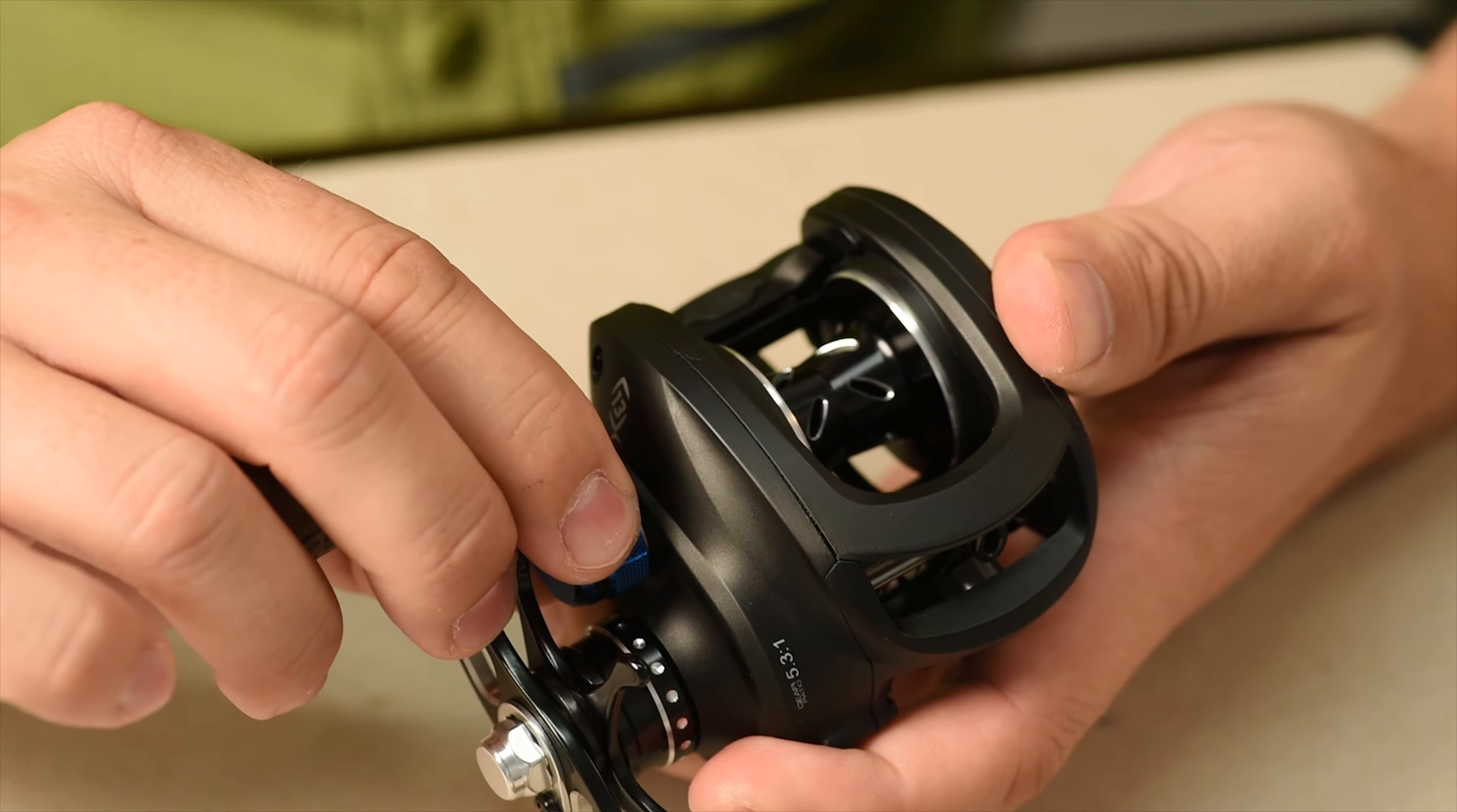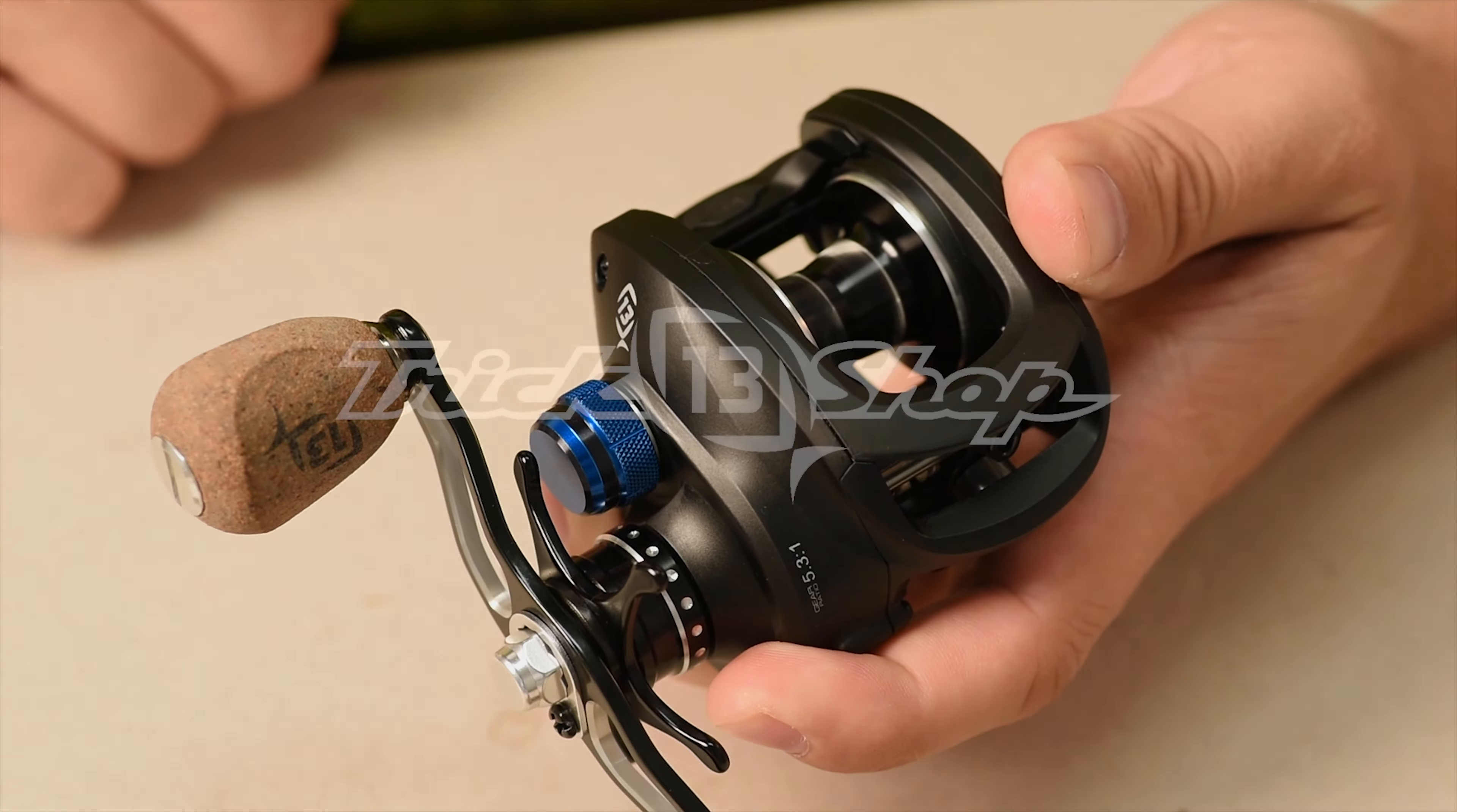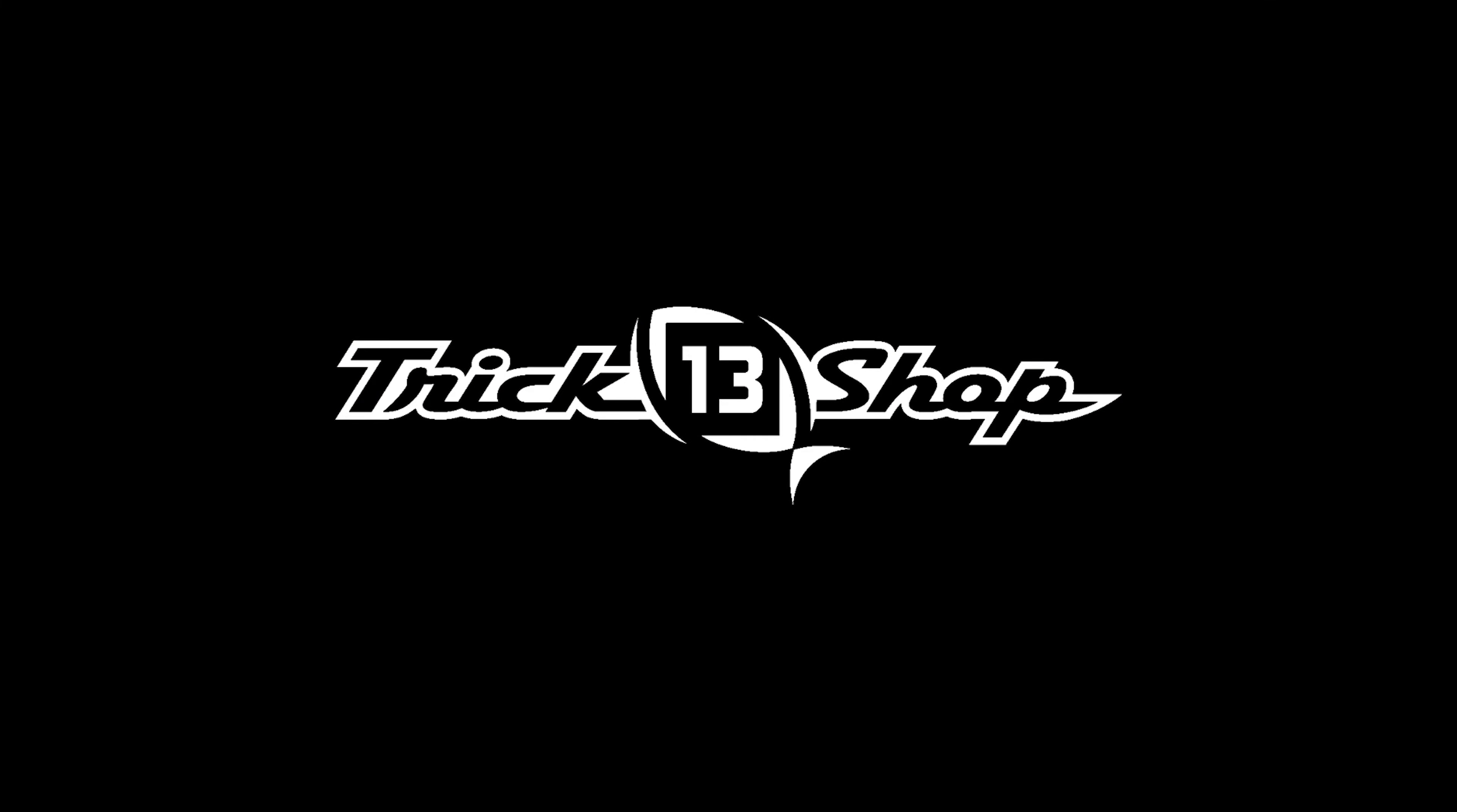To make sure it's working properly, spin your spool and adjust the cast control cap until your spool slows down. You can then back it off into the correct position and you're ready to go.